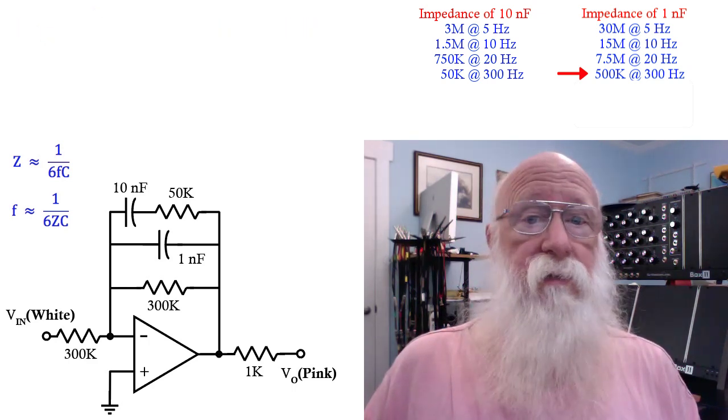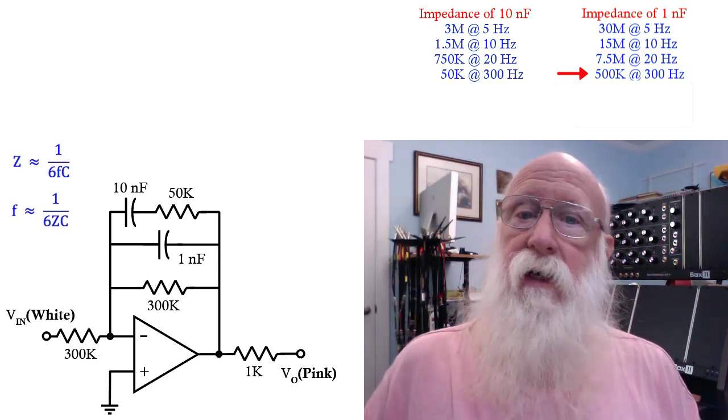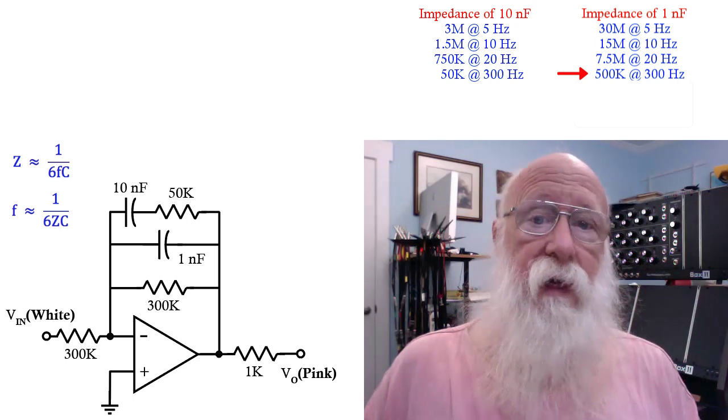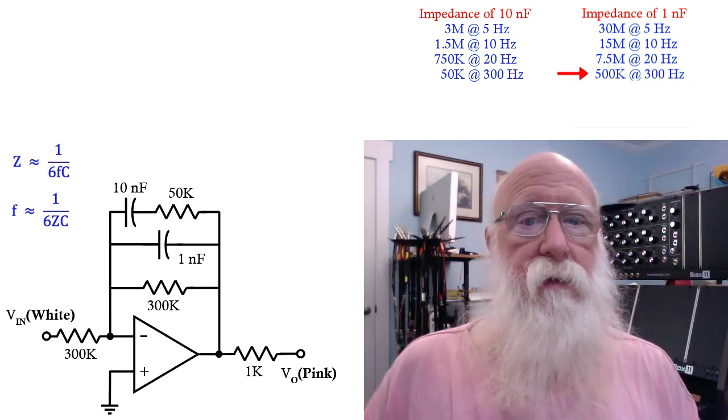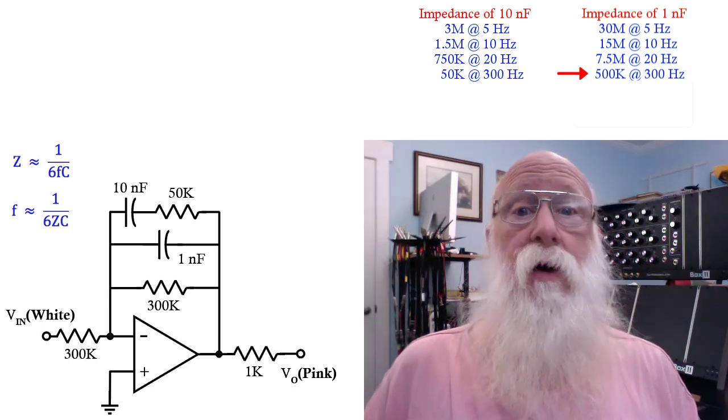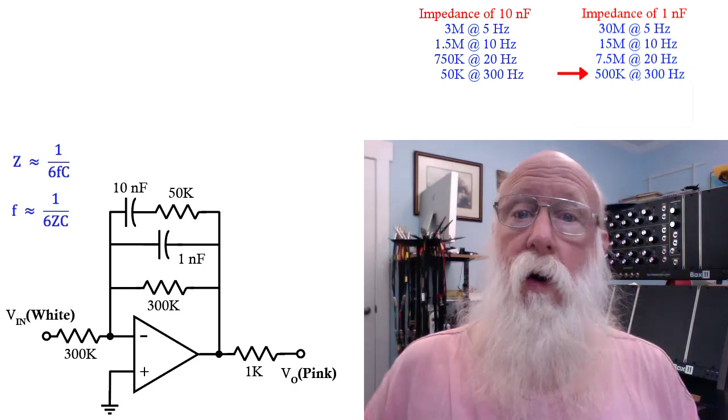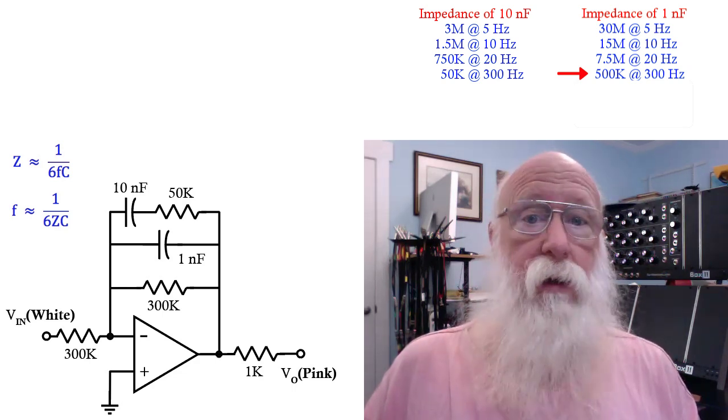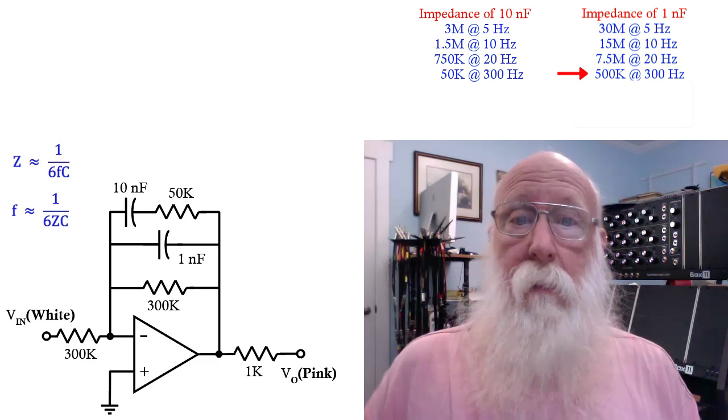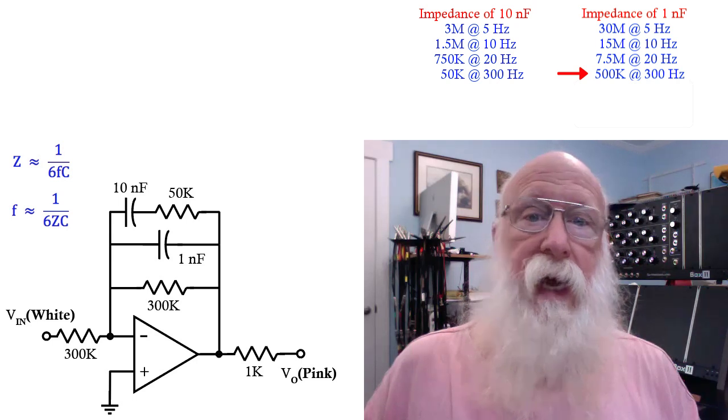As we increase the frequency above 300 hertz, the impedance of the 10 nanofarad continues to get smaller, but remember it's in series with 50K, so the overall impedance of that branch is going to asymptotically approach 50K. In other words, the impedance is going to start leveling off. For a while, that branch is still the lowest, and so it's the dominant factor, but it's not changing much, so your response starts leveling out.